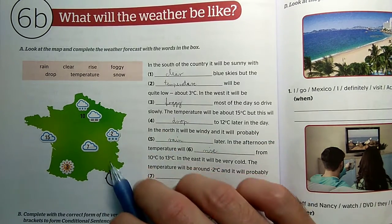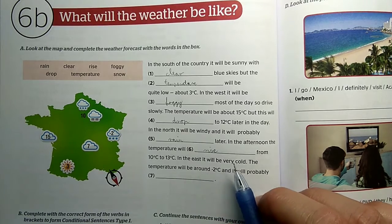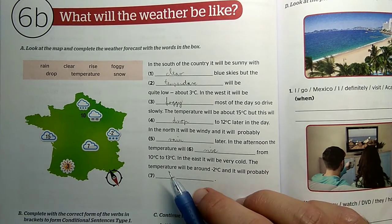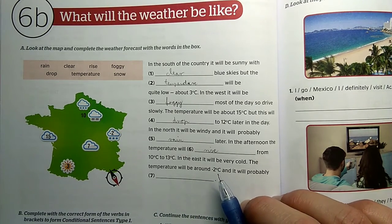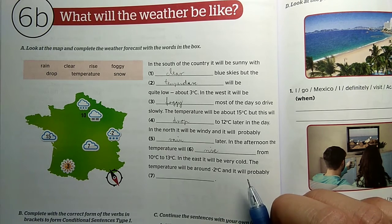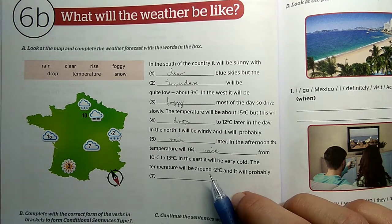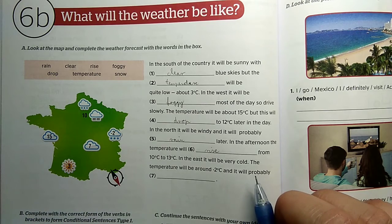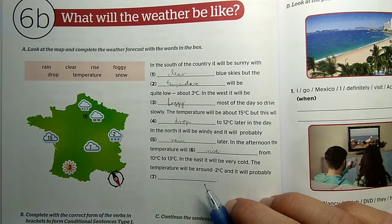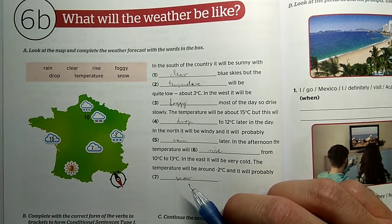In the east, it will be very cold, the temperature will be around minus 2 degrees Celsius, so it will probably snow if it's minus 2 degrees. It will probably snow.